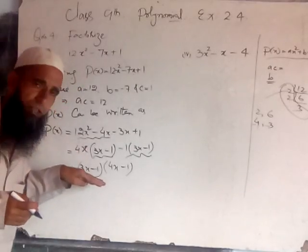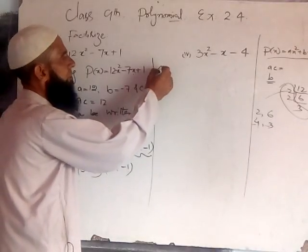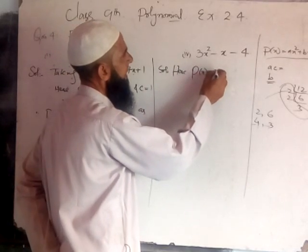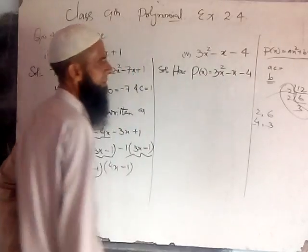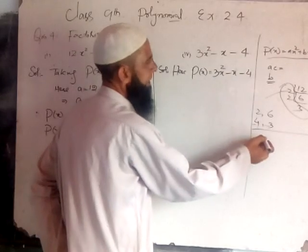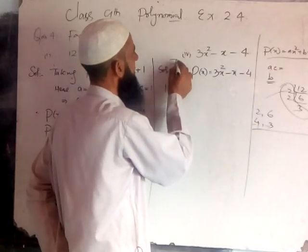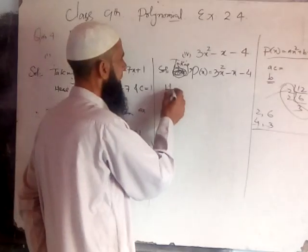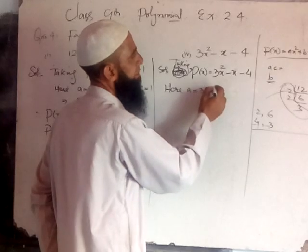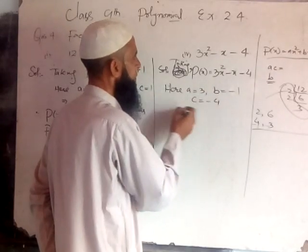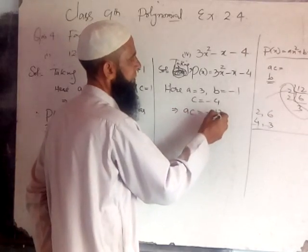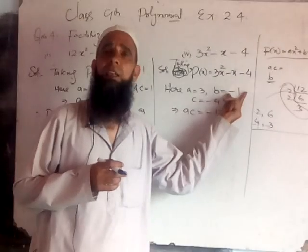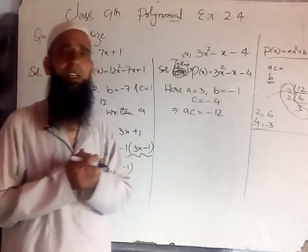For the second part, taking P(x) equal to 3x² minus x minus 4. Here a is equal to 3, b is equal to minus 1, and c is equal to minus 4. This implies AC is equal to 3 into minus 4, that is minus 12.